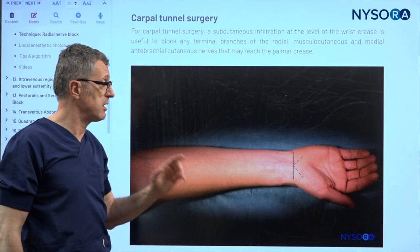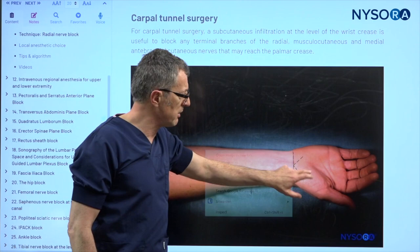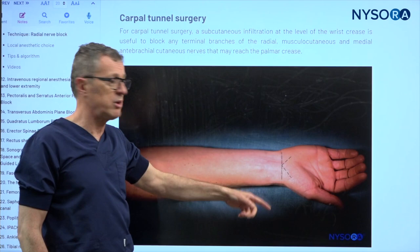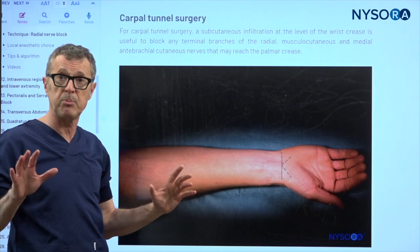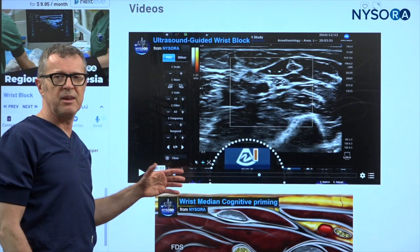For carpal tunnel syndrome surgery, you also might need to inject local anesthetic subcutaneously. Even though the median nerve and the ulnar nerve will anesthetize everything needed, you may still have branches of the musculocutaneous nerve passing in that direction. Therefore, a small subcutaneous injection of two or three milliliters of lidocaine will take care of that possibility.